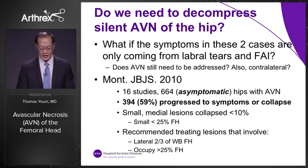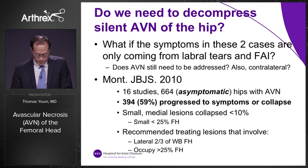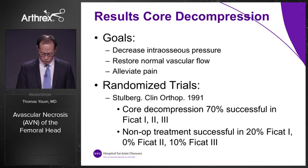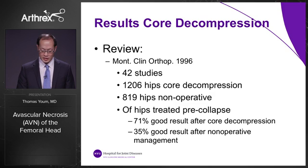Why do we need to decompress asymptomatic avascular necrosis? Mont in JBJS 2010 reviewed 16 studies and found 664 asymptomatic hips with AVN; 59% or 394 hips progressed to symptoms or collapse. Small or medial lesions collapsed less than 10% of the time. He recommended treating lesions involving the lateral two-thirds of the weight-bearing femoral head occupying greater than 25% of the femoral head. The goals of core decompression are to decompress intraosseous pressure, restore normal vascular flow, and alleviate pain. A randomized trial by Stuhlberg showed 70% success in non-collapse lesions; Mont's 1996 review of 42 studies and 1200 hip core decompressions showed 71% good results.